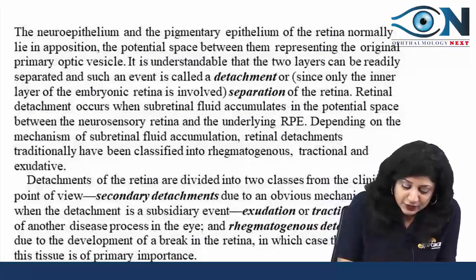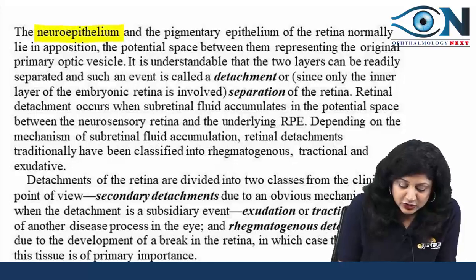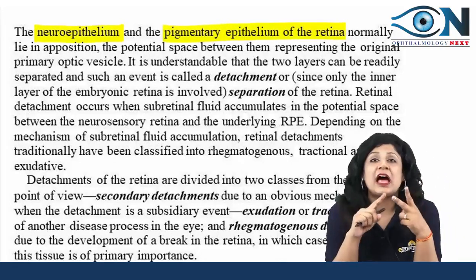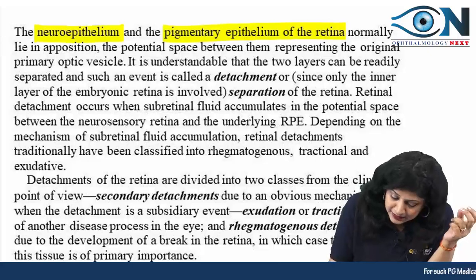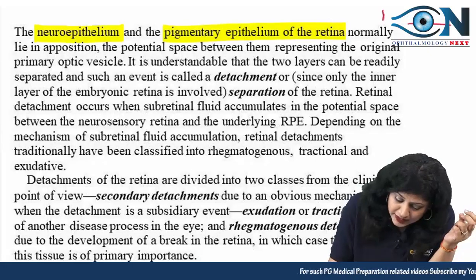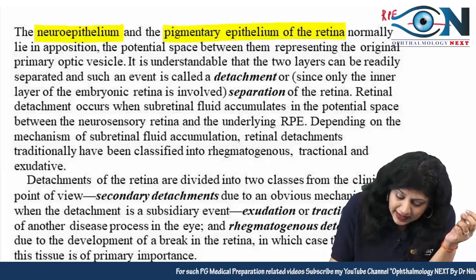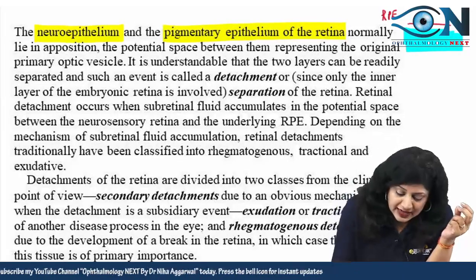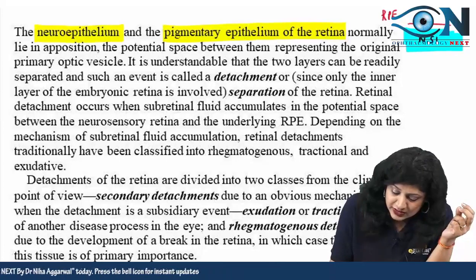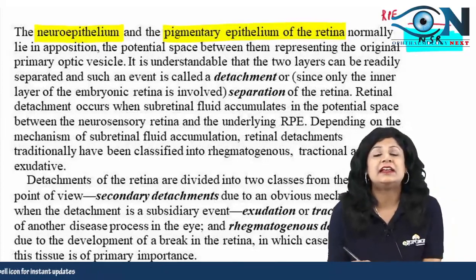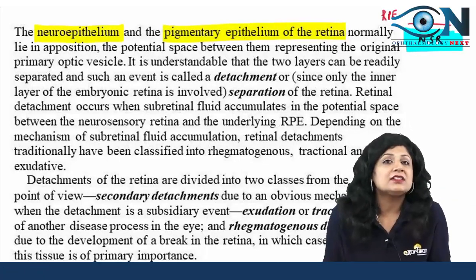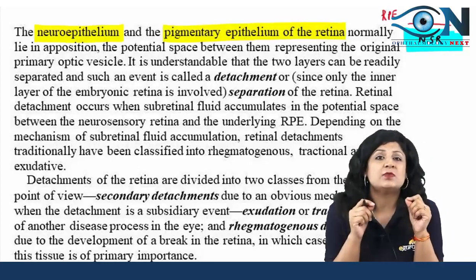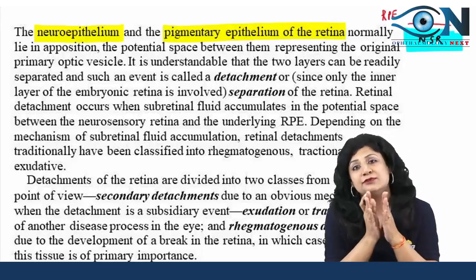We already know that the retina has two layers. One is your outermost layer, the RPE layer, and the second is your neurosensory retina, which consists of 9 layers. There is a subretinal space between them, and in this subretinal space we have a fluid called subretinal fluid.